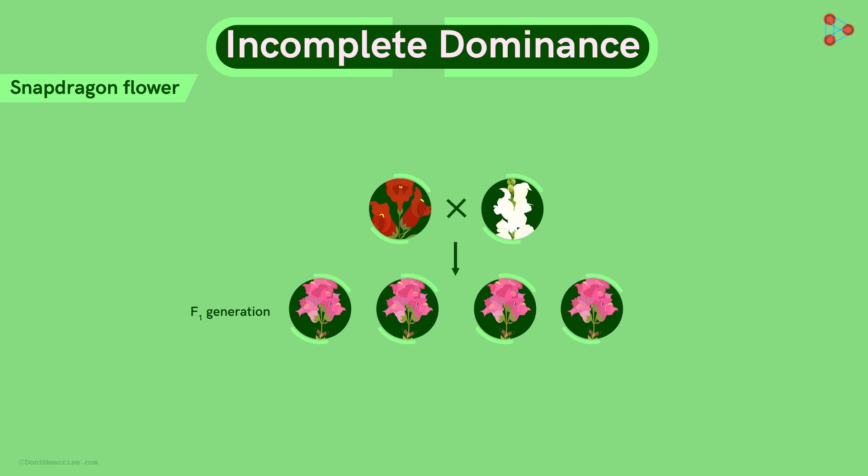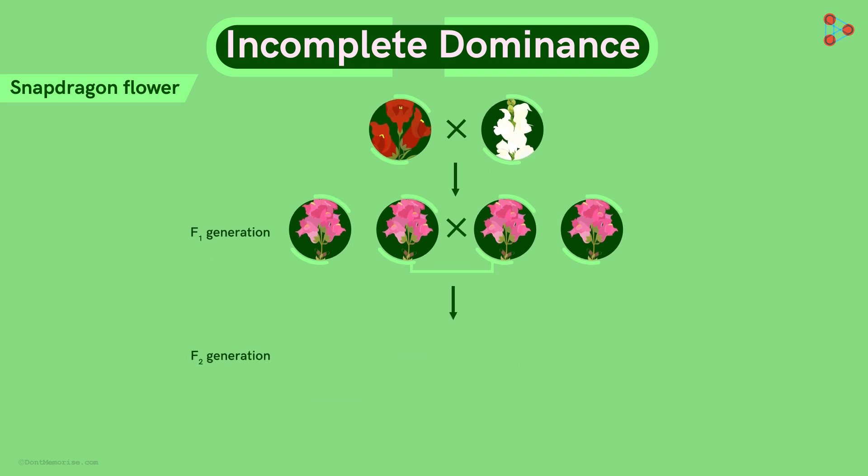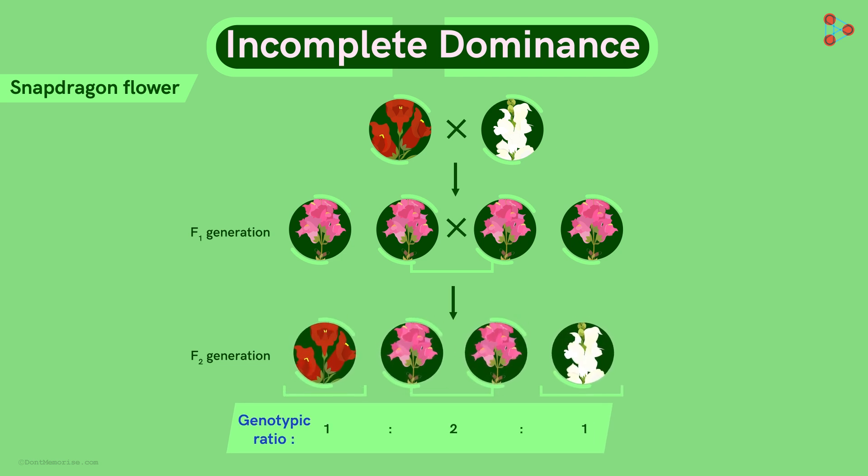However, this is not a complete exception to Mendelism. If the pink flowers are crossed, then the F2 generation gives us the typical 1 to 2 to 1 genotypic ratio. How does this happen?